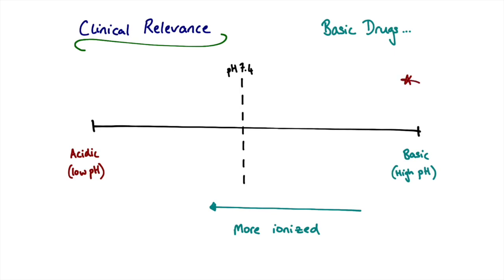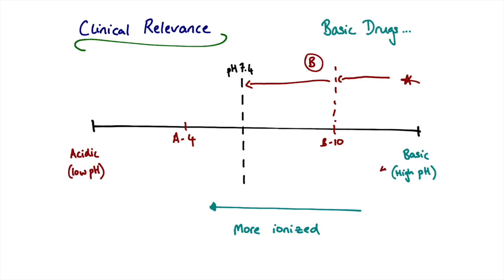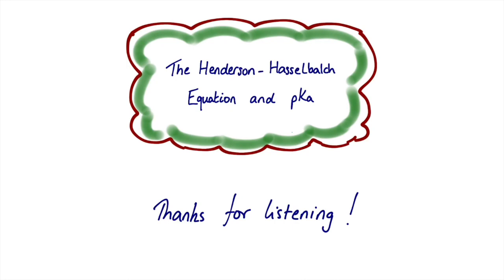The exact reverse argument applies for basic drugs. Basic drugs approach from the high-pH side, so drug B with pKa 10 reaches 50% dissociation before pH 7.4, making it more dissociated. Drug A with pKa 4 hasn't reached 50% dissociation by pH 7.4. Therefore for basic drugs, higher pKa values correspond to more ionization at physiological pH. Thanks for listening — in the next video we'll look at a specific example comparing lignocaine with bupivacaine.